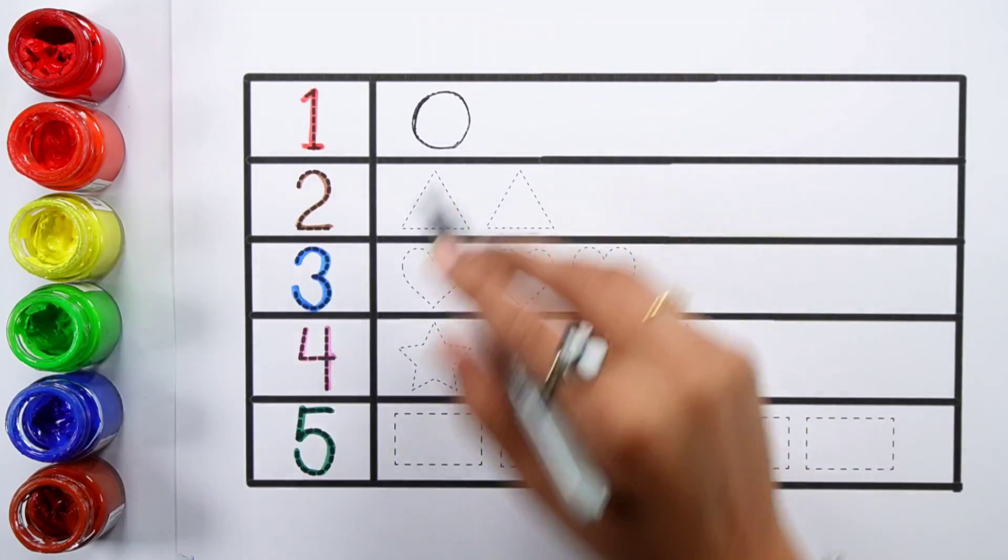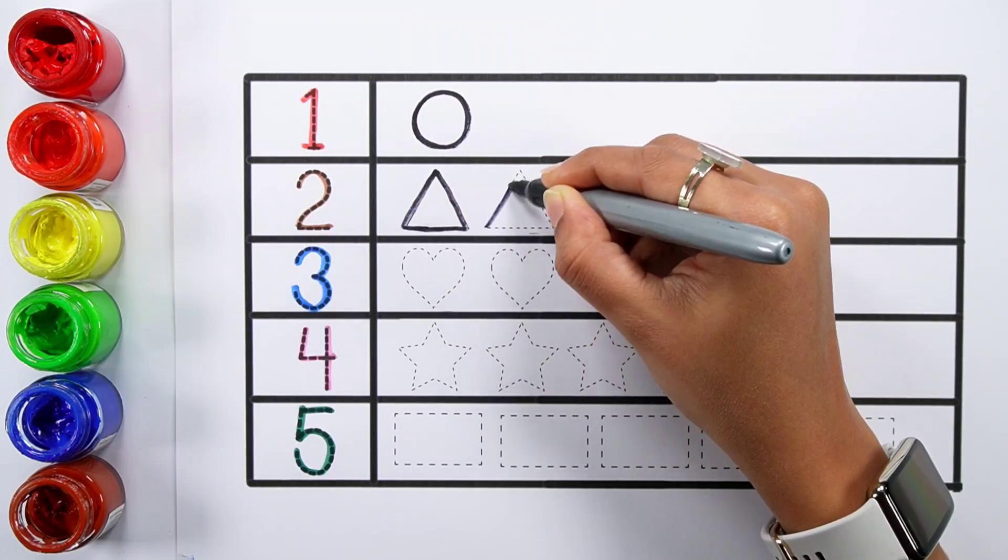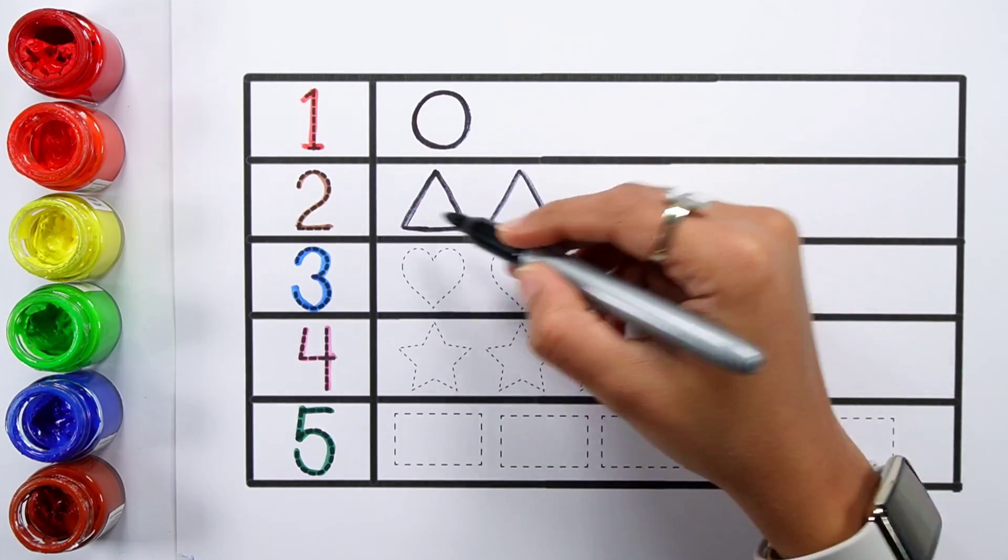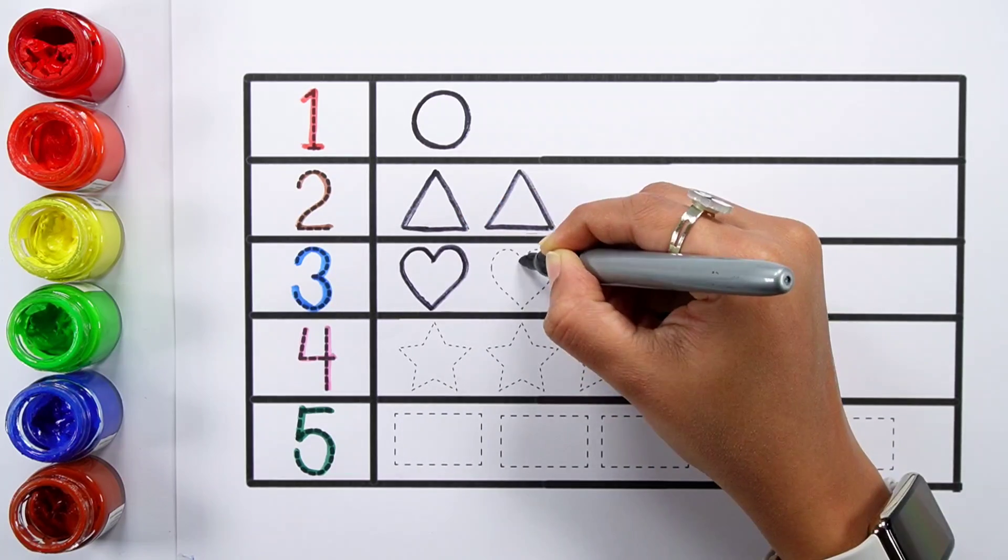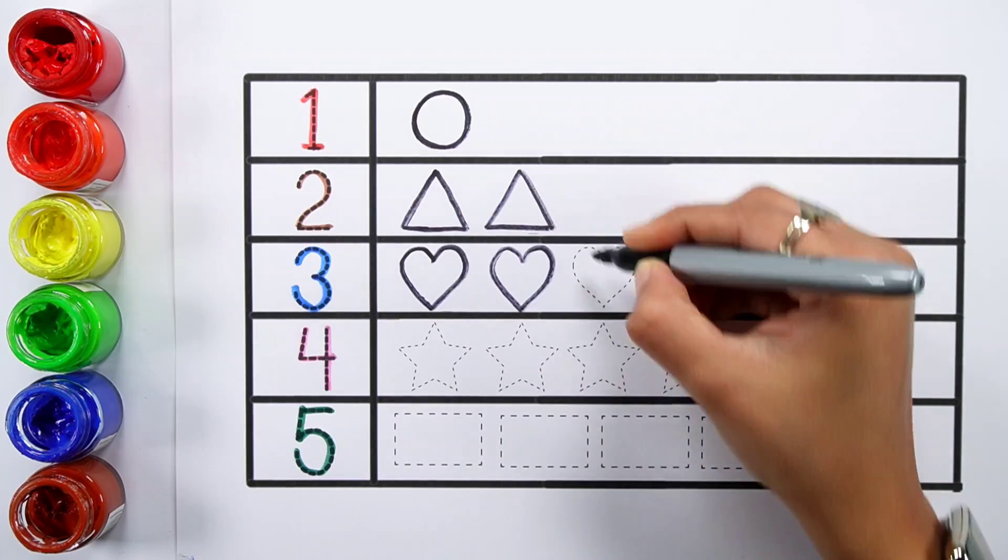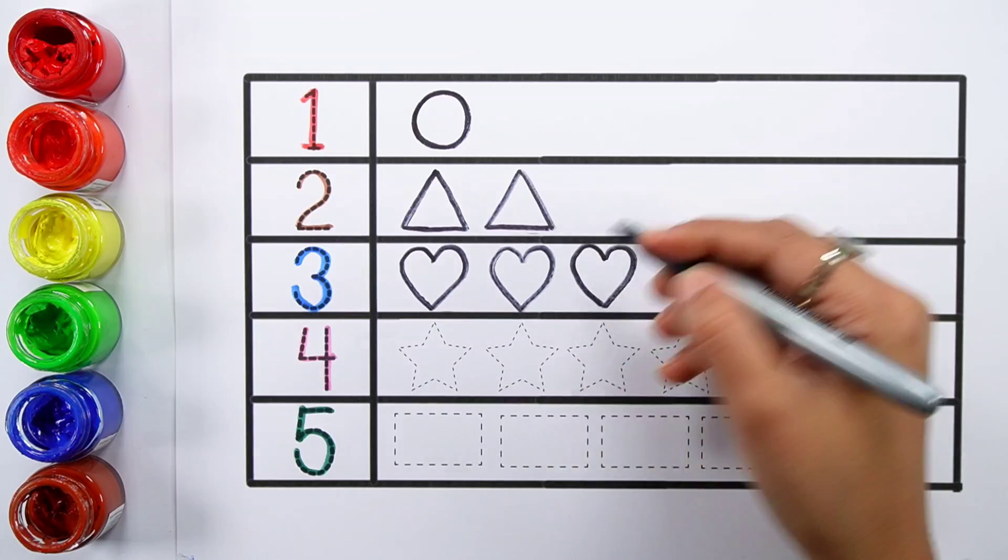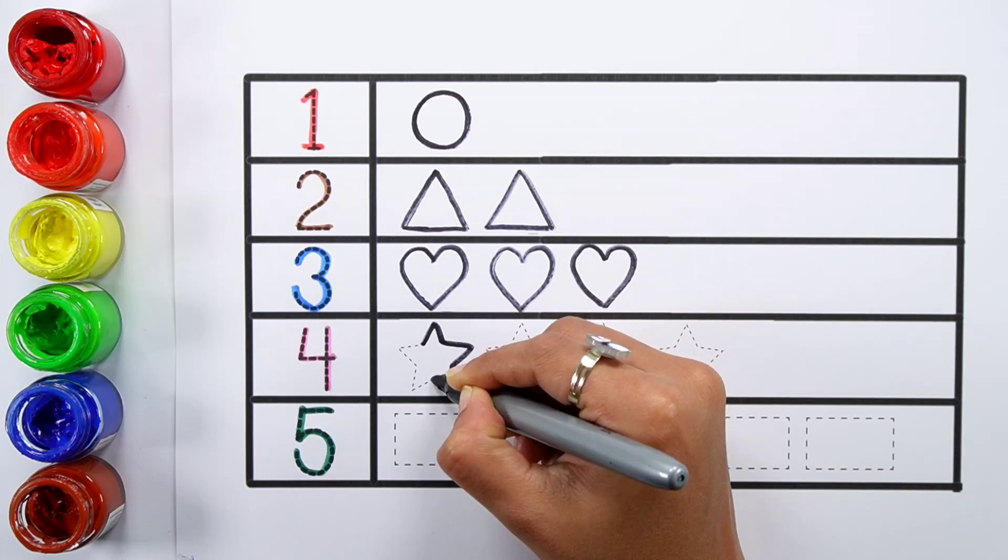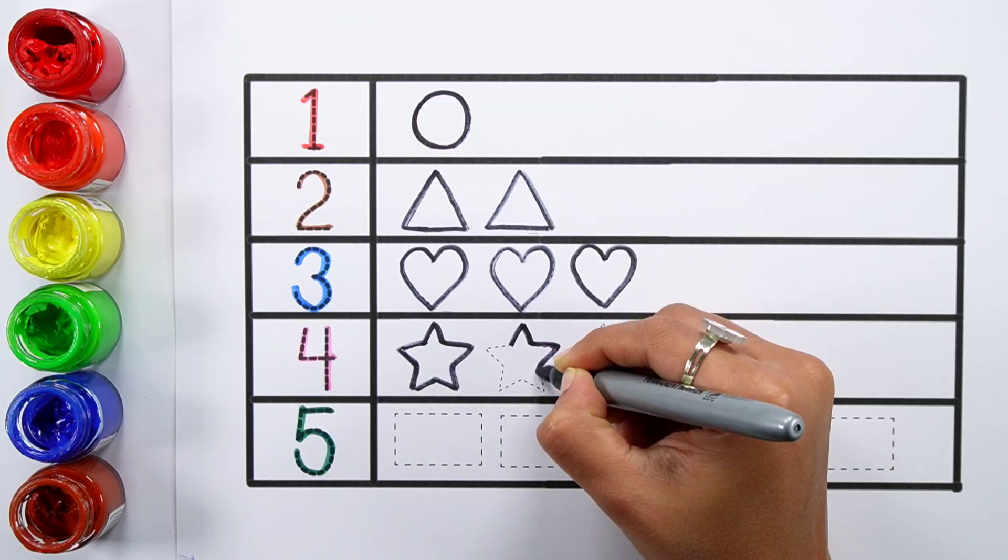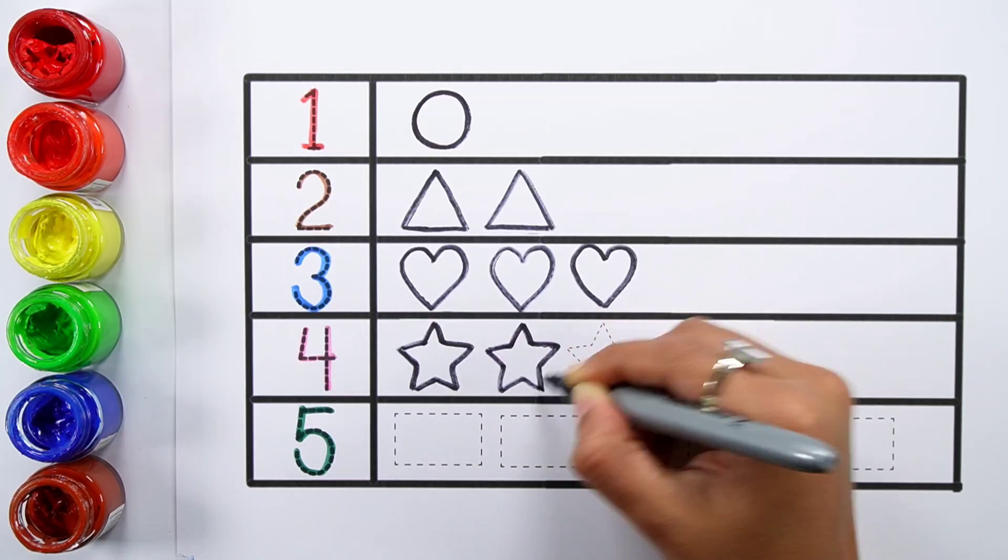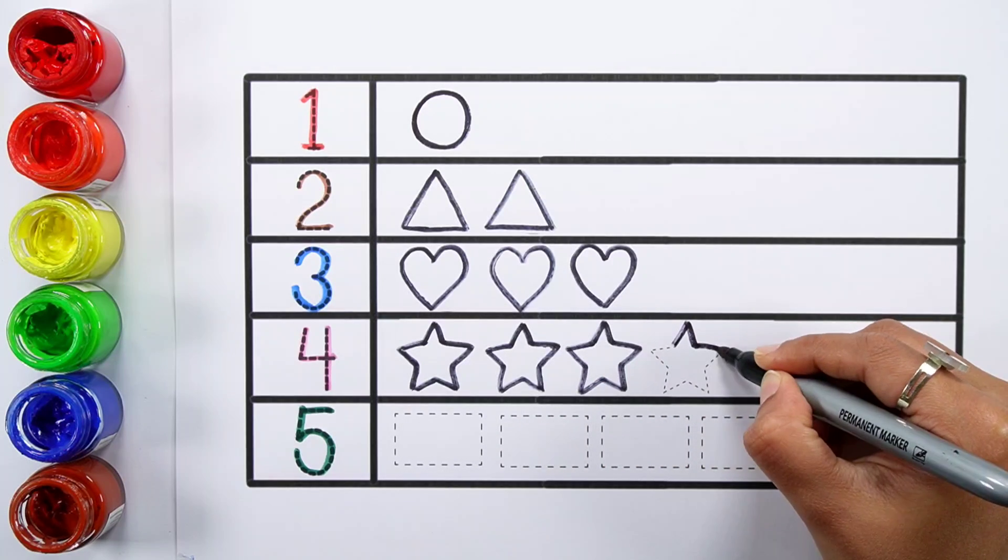One circle. One, two - two triangles. One, two, three - three hearts.